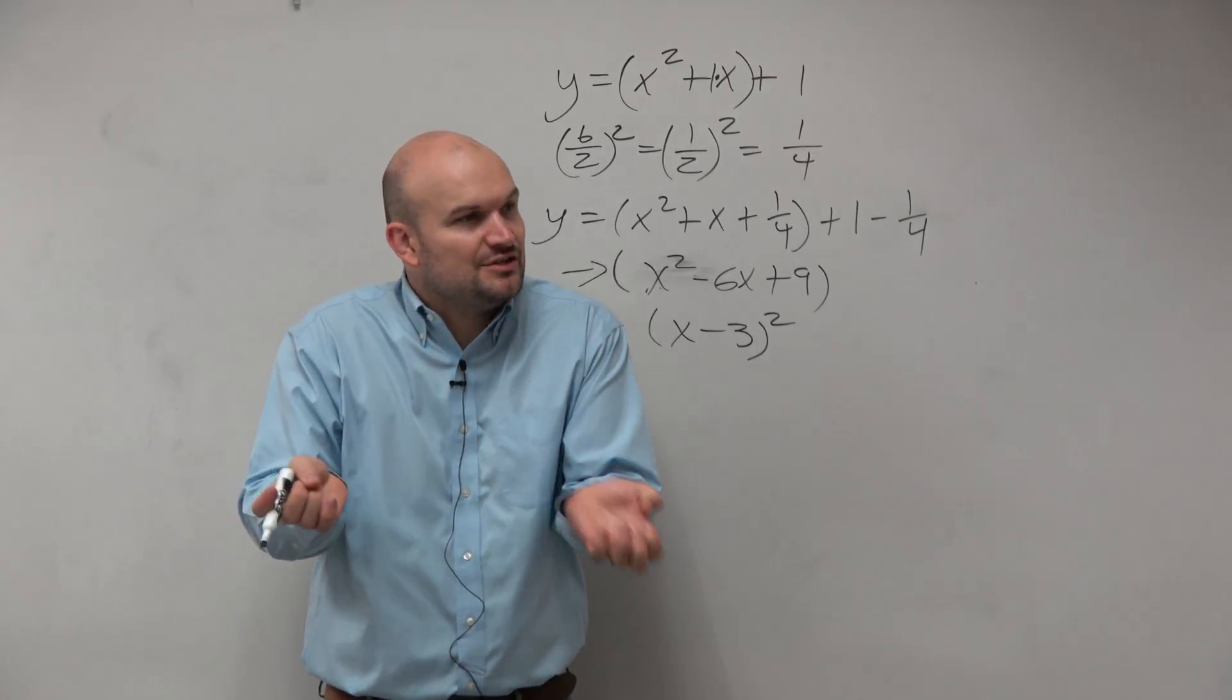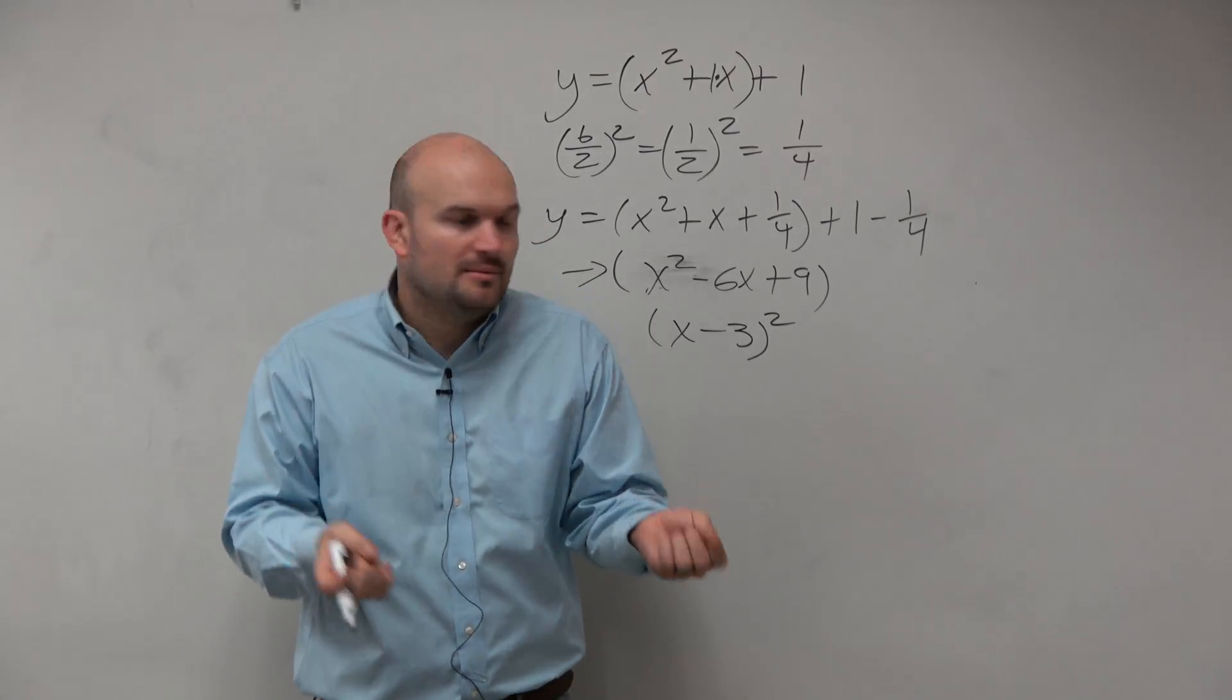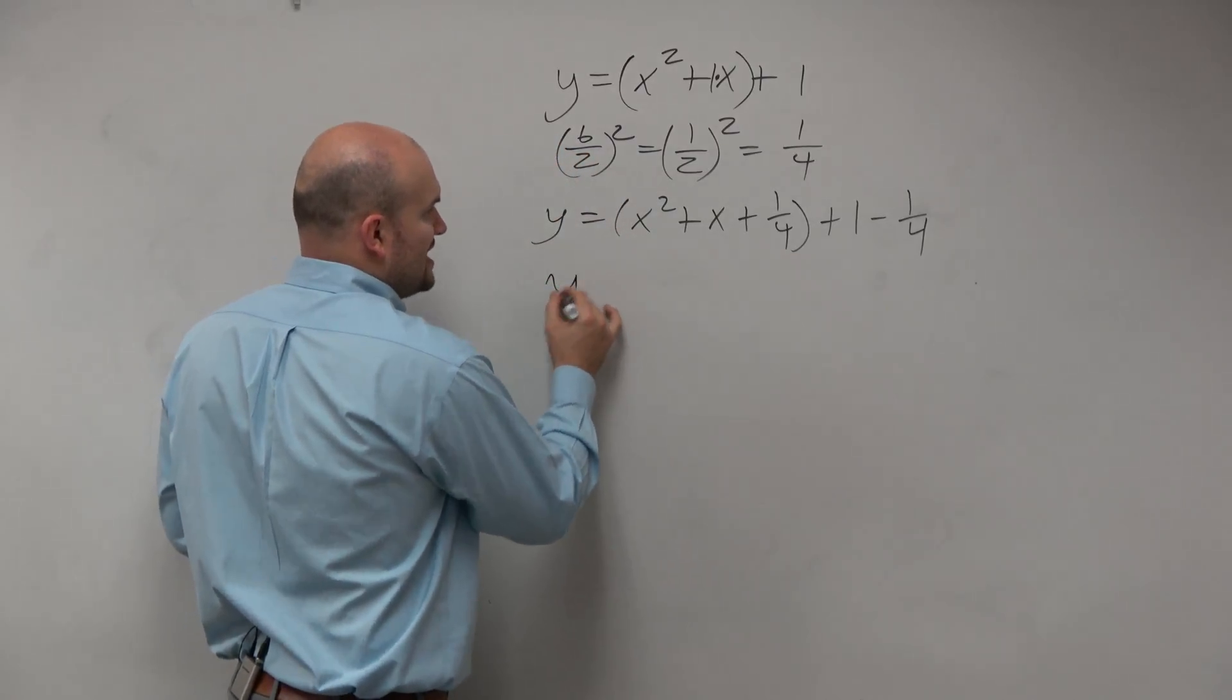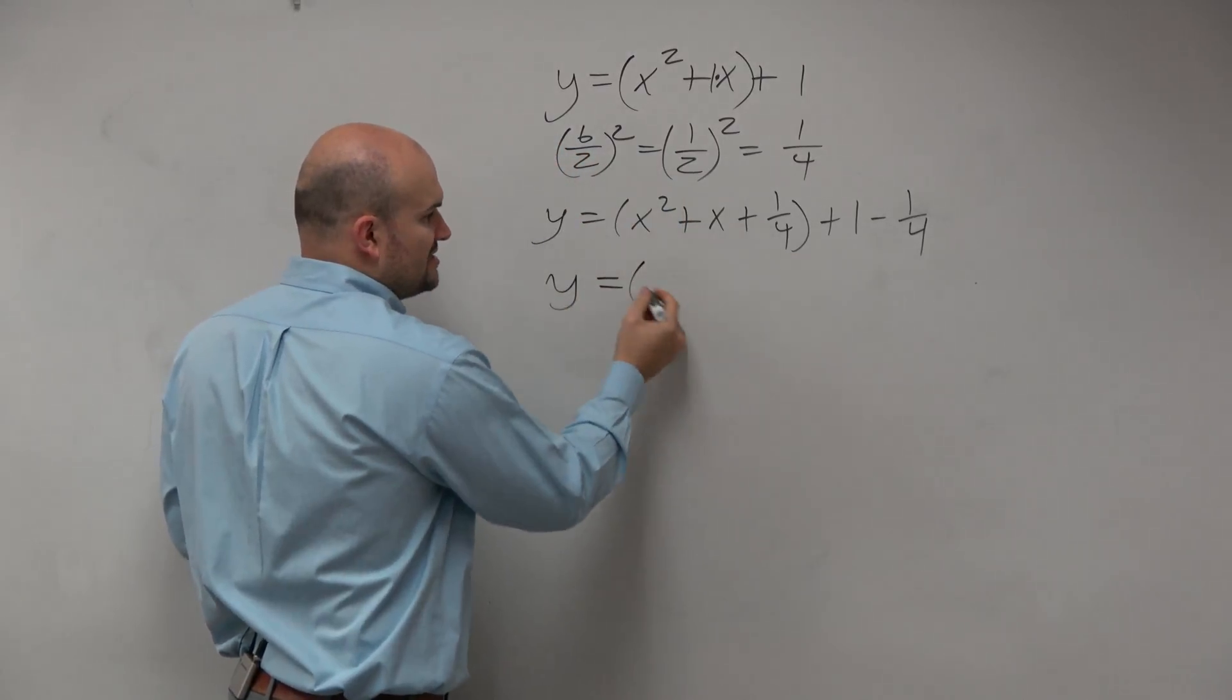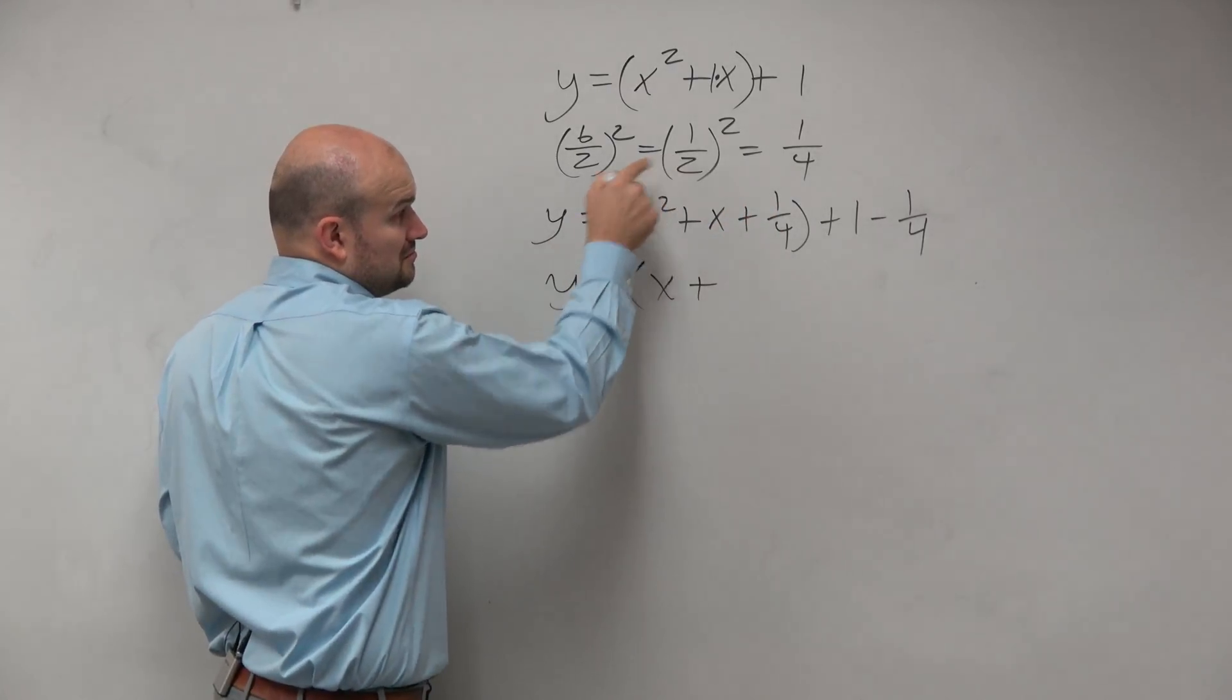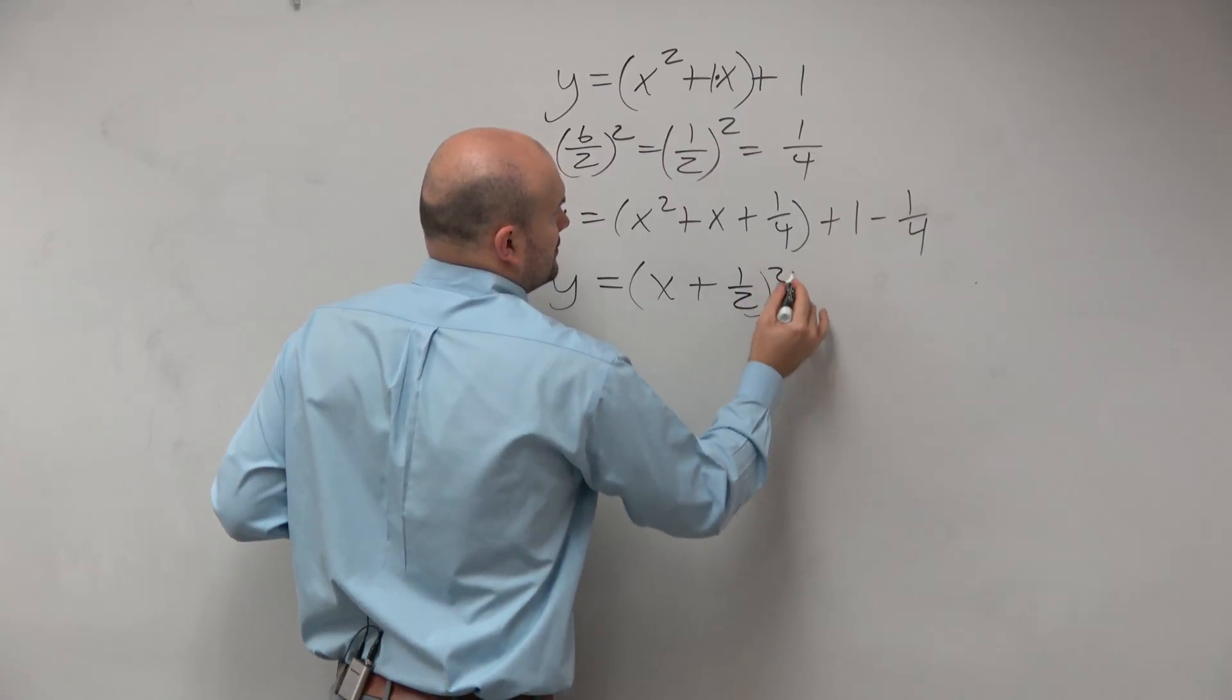That's why I asked you guys, what are the patterns you guys saw? Because now, if I look at this, if I want to take the square root, if I want to factor this, this actually isn't that bad. Square root of x squared is x, positive, positive. Square root of 1 fourth is 1 half. Done.